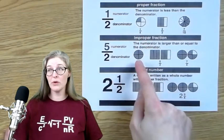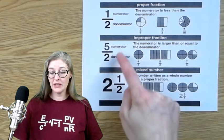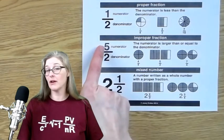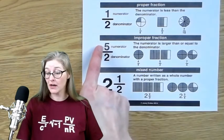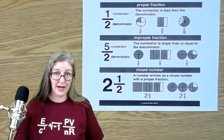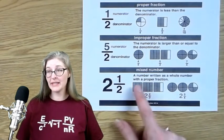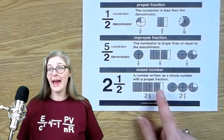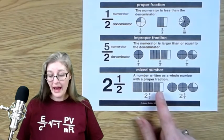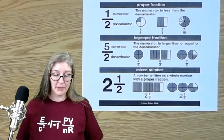If I have more than one, or equal to one — if these two numbers are equal or if the numerator is bigger — that is referred to as an improper fraction. Now, if I am mixing whole numbers and proper fractions, I end up with something called a mixed number.